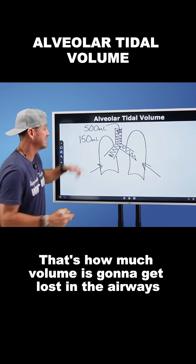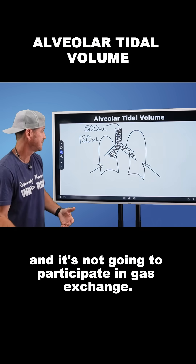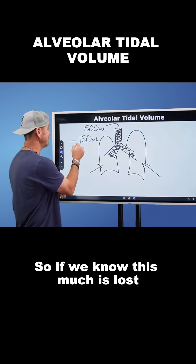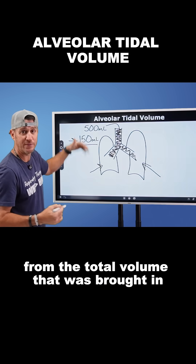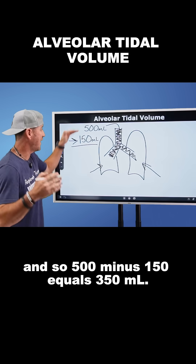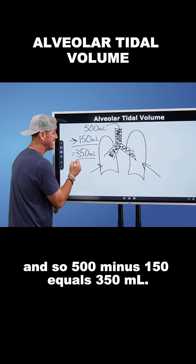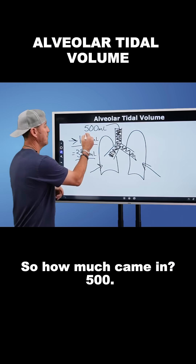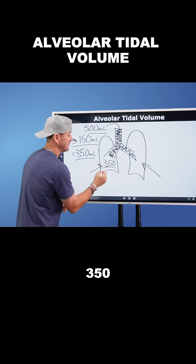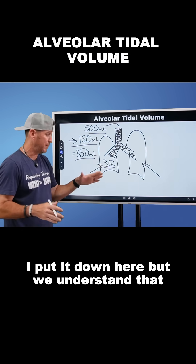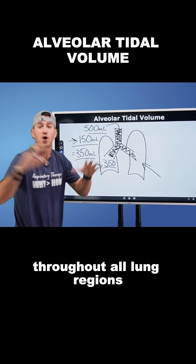That's how much volume is going to get lost in the airways and is not going to participate in gas exchange. So if we know 150 milliliters is lost, all we have to do is subtract 150 from the total volume brought in — that's 500. So 350 milliliters actually made its way to the alveolar units. That's alveolar tidal volume, and that 350 milliliters is going to be dispersed equally throughout all lung regions.